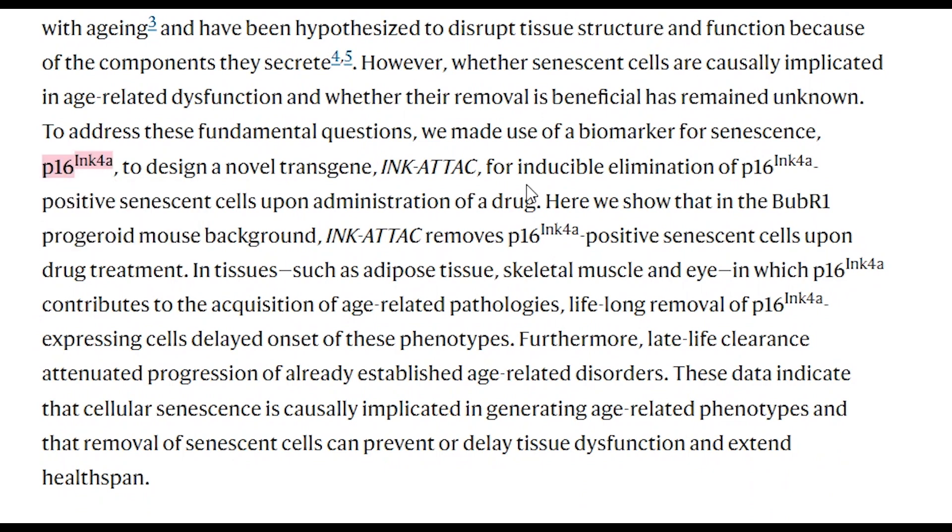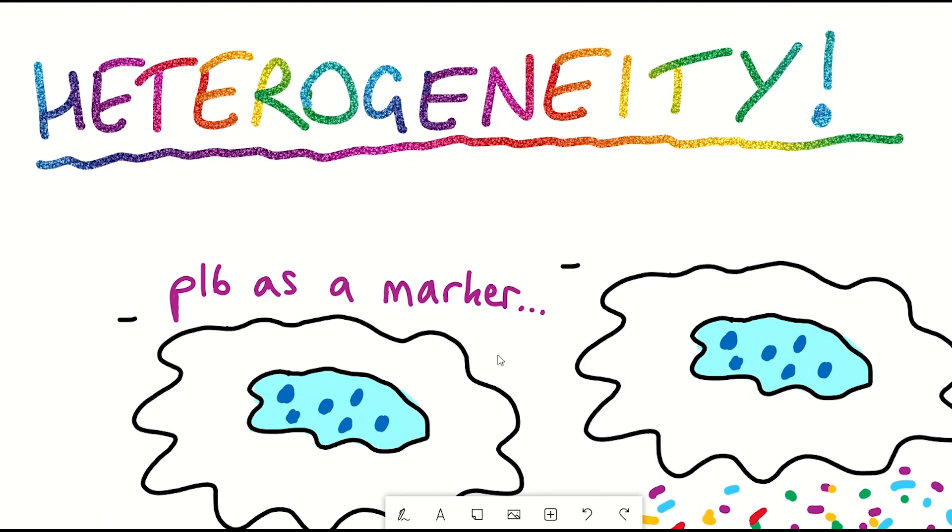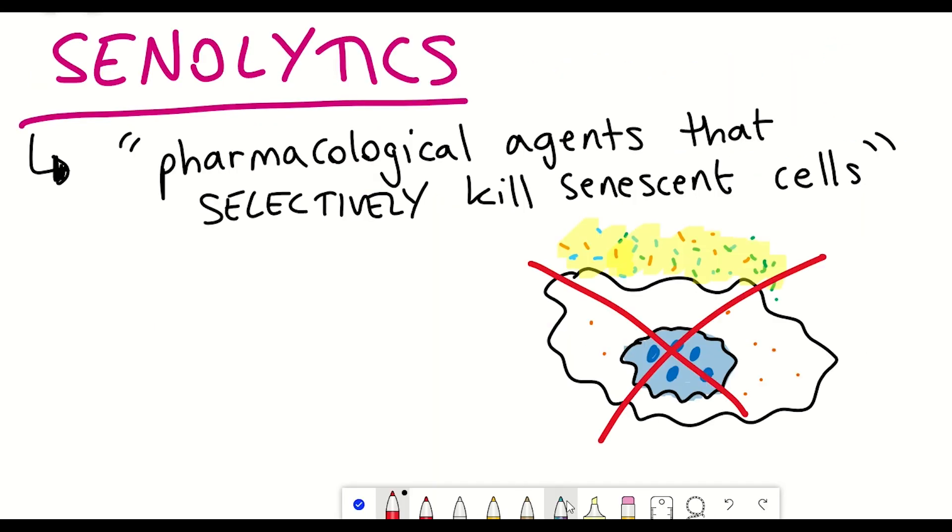And so you might be thinking, why is she talking about something called P16 now? Well, they were using high expression of P16 as a marker for senescent cells. However, I just told you that senescent cells are very heterogeneous. Is high P16 expression actually marking all of the senescent cells? Or are just a subset of these senescent cells getting cleared? And are these senescent cells getting cleared the same ones as those used by different senolytics, drugs that kill senescent cells, so non-genetic approaches.